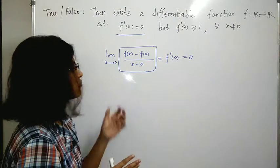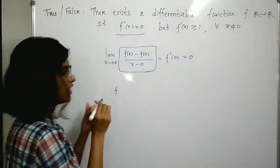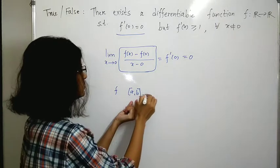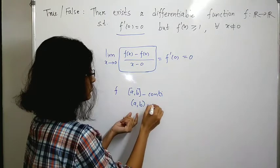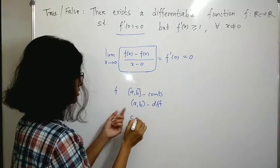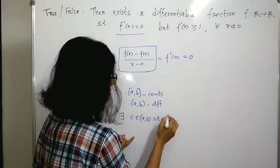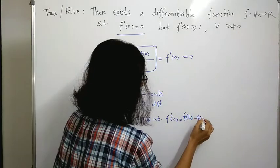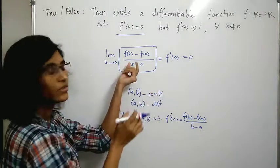Now we can get this quantity from the Mean Value Theorem, which is very important. Suppose we have some function f defined on a closed interval [a, b]. If f is continuous on [a, b] and differentiable on the open interval (a, b), then there exists c in (a, b) such that f'(c) = [f(b) - f(a)] / (b - a).